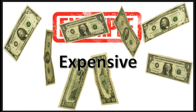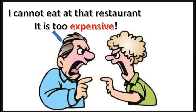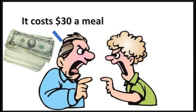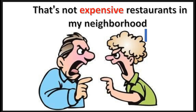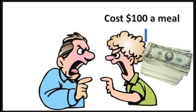Here's another example. Because of the vague word 'expensive': Jack says, I cannot eat at that restaurant, it's too expensive — it costs $30 a meal. And Jill says, that's not expensive. Restaurants in my neighborhood cost $100 a meal.